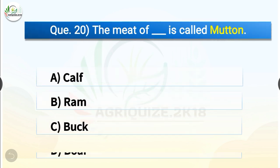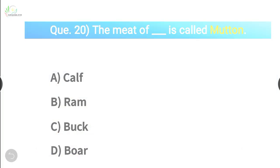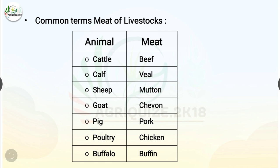Question number 20. The meat of dash is called mutton. The options are calf, ram, buck or boar. The correct answer is option B, ram. So the meat of ram is called mutton. Cattle meat is beef, calf meat is veal, sheep meat is mutton, goat meat is chevon, pig meat is pork, poultry meat is chicken, and buffalo meat is buffin.